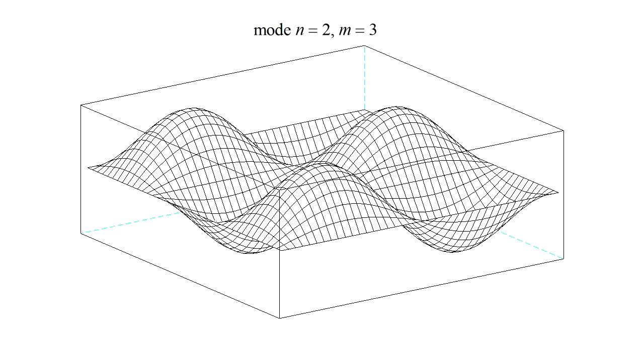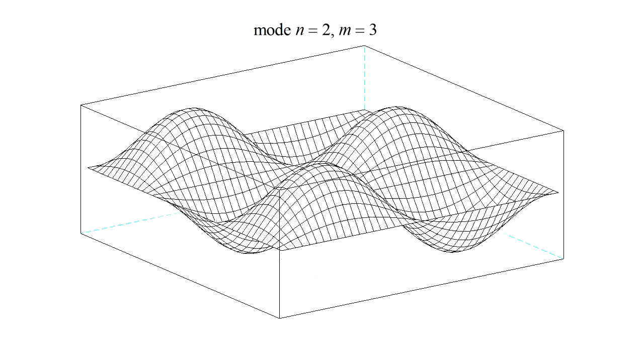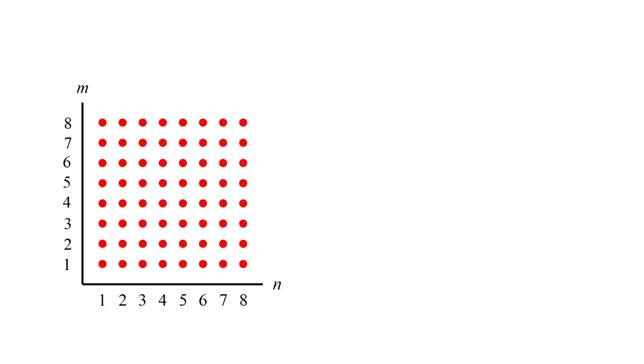And in general we can have any number of bumps n in one direction and any number m in the other direction. So the modes are now represented as points on a two-dimensional grid, indexed by two numbers, n and m.